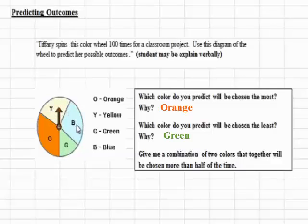If we look at Y and B, we can see that together they're going to make a piece that's bigger than half of the circle, so that's a good choice.